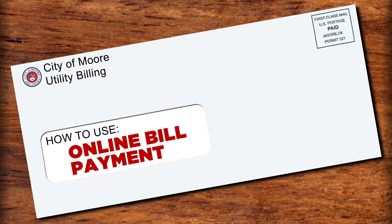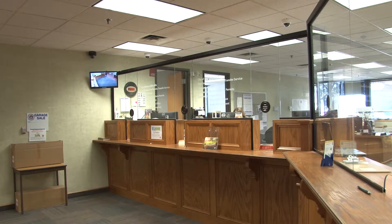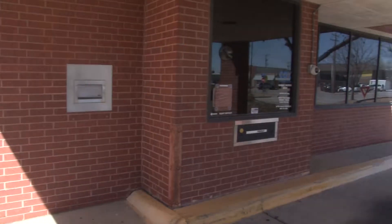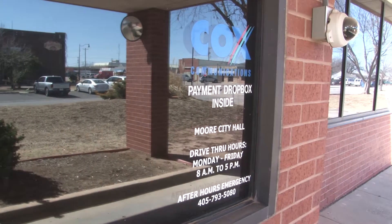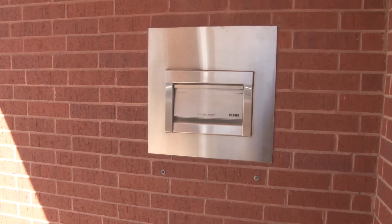There are a lot of standard ways to pay your City of Moore utility bill. You can send your utility bill through the mail in the city-provided envelope that comes with your bill. You can bring it inside our lobby and pay one of the cashiers, who will provide you with a receipt. Or you can drop off your payment in the drive-through on the south side of City Hall. There's also an after-hours dropbox at the drive-through. But perhaps the most efficient way to pay your utility bill is online.